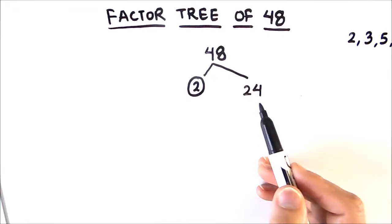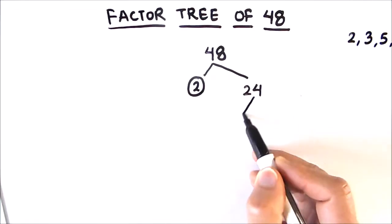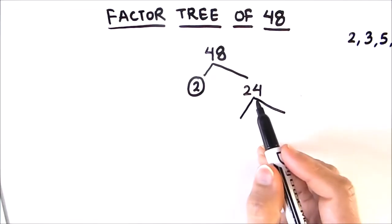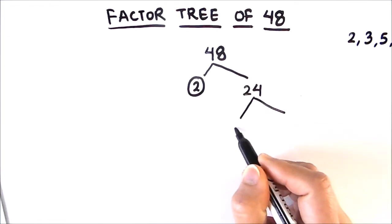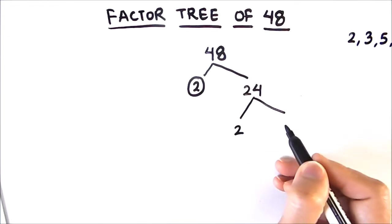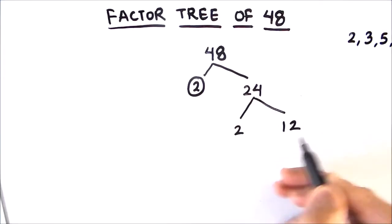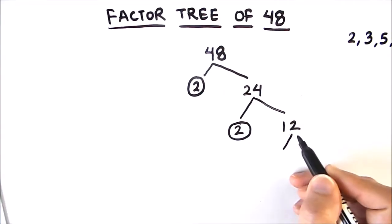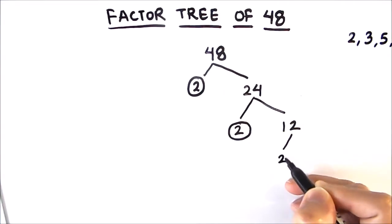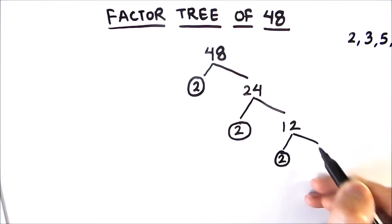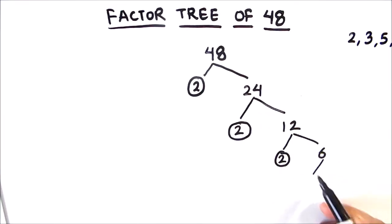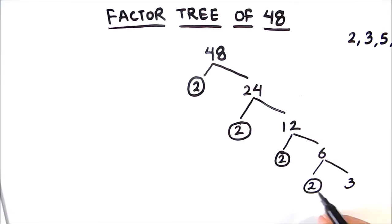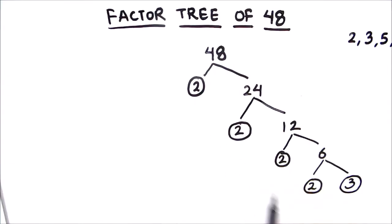We will divide 24 and find its factors. As it is an even number, it can further be broken down into 2 and 12, since 2 times 12 is 24. 2 is again prime, so we are going to circle 2. Next, 12 is even so it can be broken down into 2 times 6. Again, 6 can be broken down into 2 and 3, and here we see that both numbers are prime numbers, so we are going to circle both.